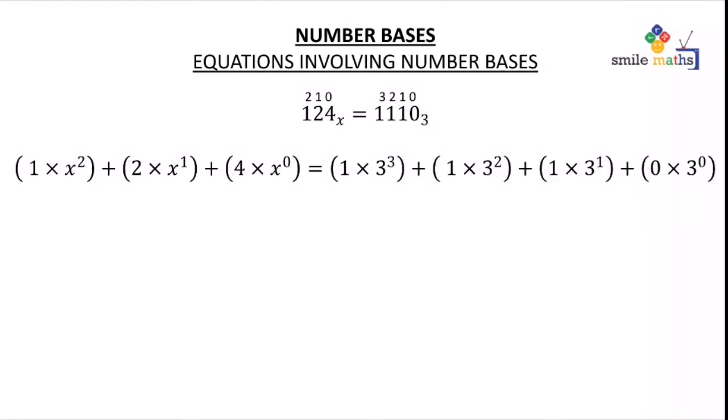Simplifying this we have 1 times x to the power 2 plus 2 times x to the power 1 plus 4 times x to the power 0 equals 1 times 3 cubed plus 1 times 3 squared plus 1 times 3 to the power 1. This gives us x squared plus 2x plus 4 equals 27 plus 9 plus 3 plus 0, giving us x squared plus 2x plus 4 equals 39.